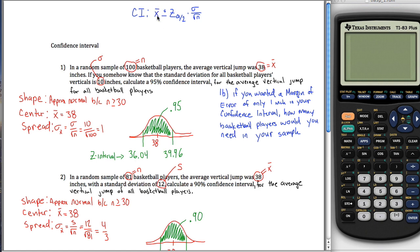What this formula is saying is the middle of your confidence interval is x-bar — that's this 38 right here — but then we also go up and down by some amount. That amount is what's called your margin of error. So the distance from 38 to 39.96, that 1.96, is called the margin of error, and it's given by this formula right here.